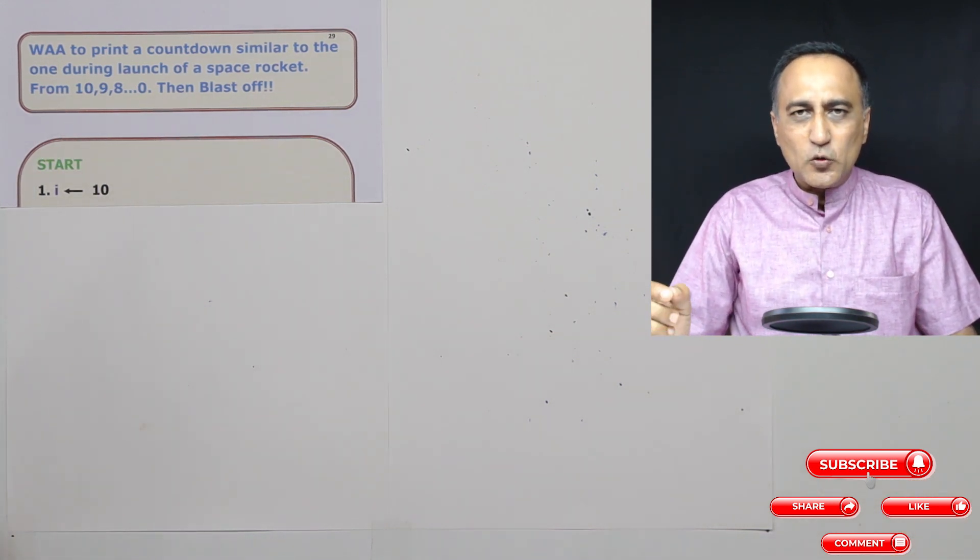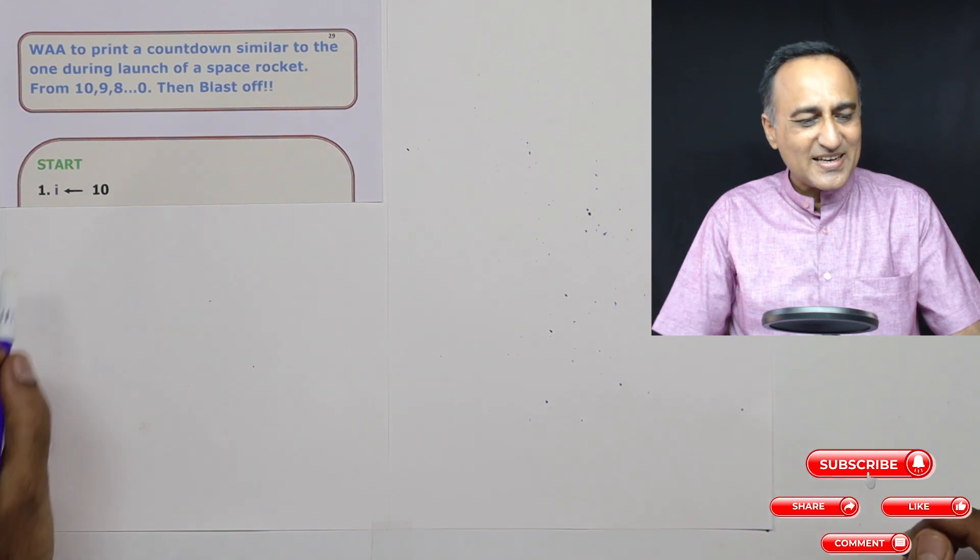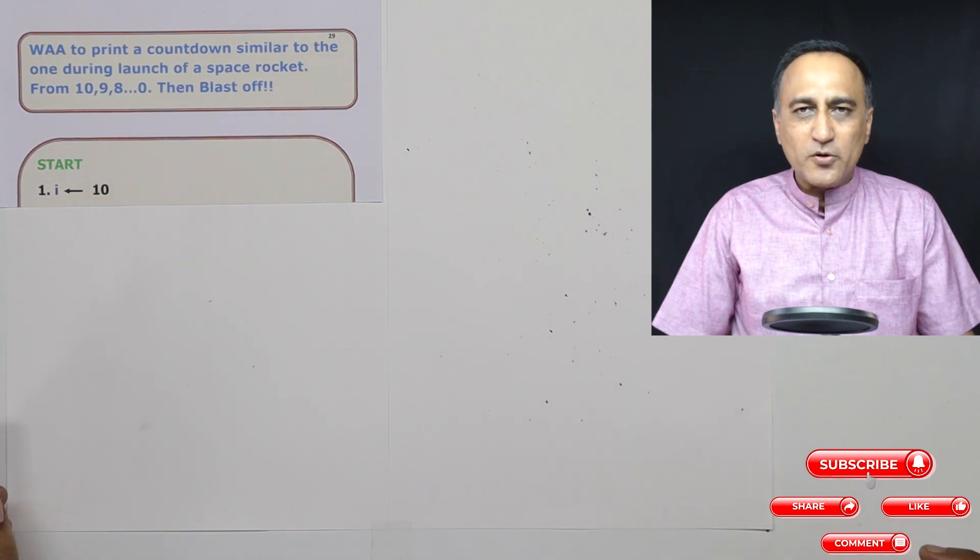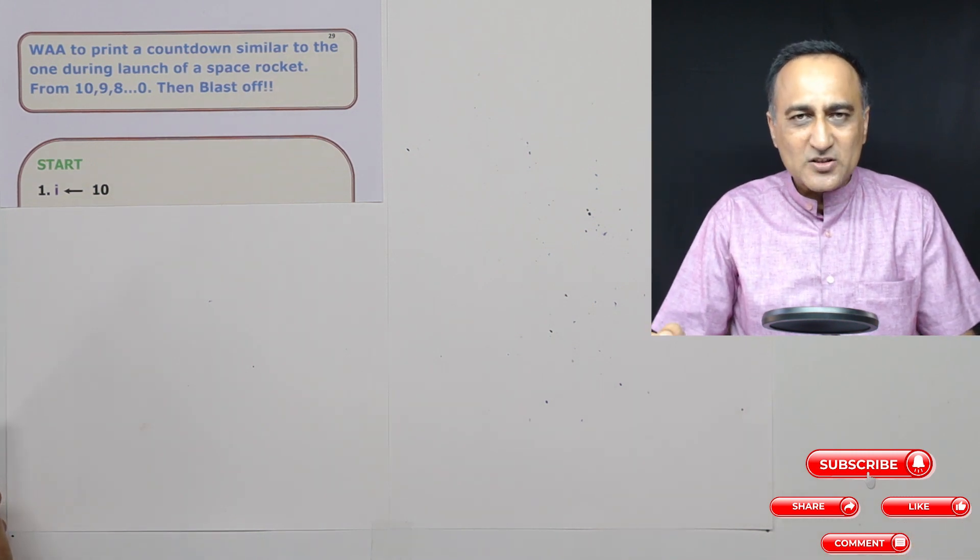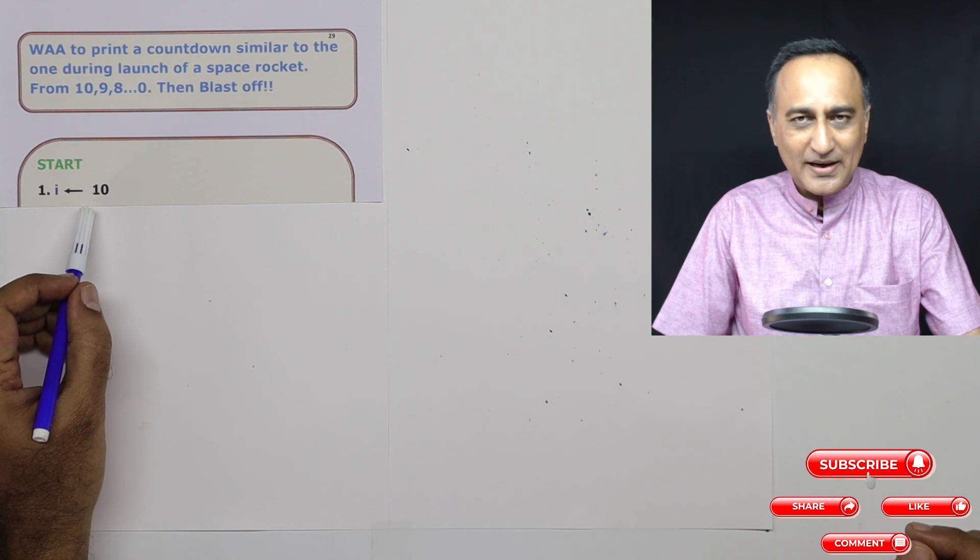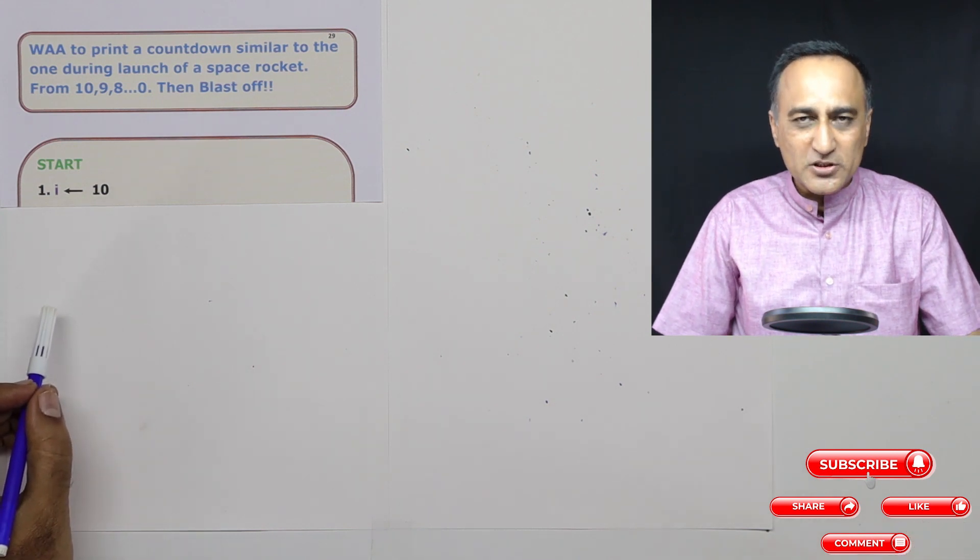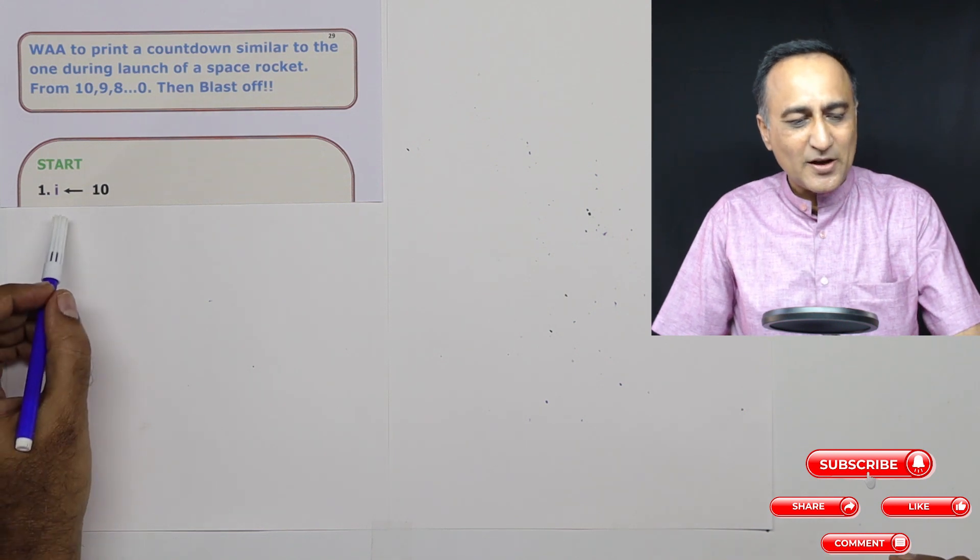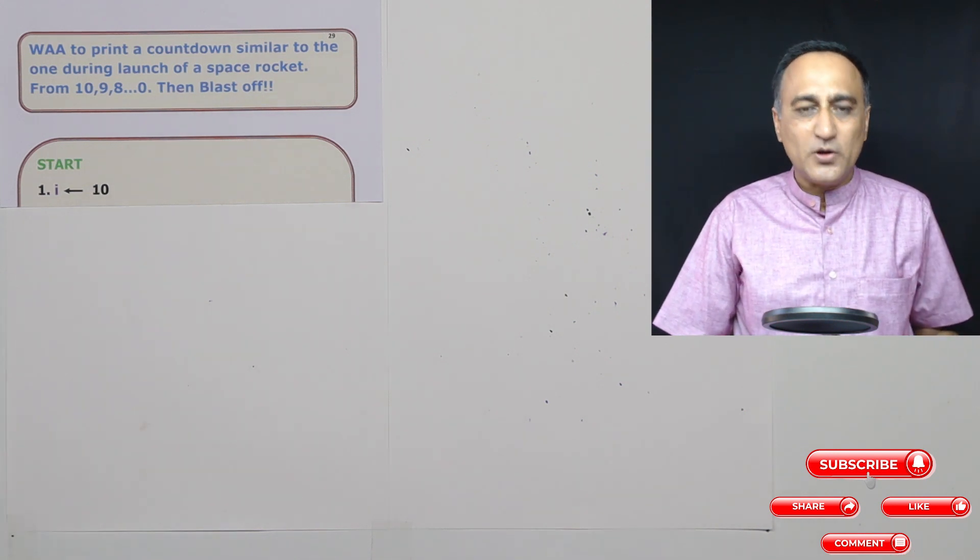So in order to do the countdown, I just need a single variable that we call I with the initial value 10. So what I want to do here is as long as, or while I is greater than or equal to zero, I am going to print the value of I, then I'm going to reduce the value of I and continue this process as long as the value of I is greater than or equal to zero.